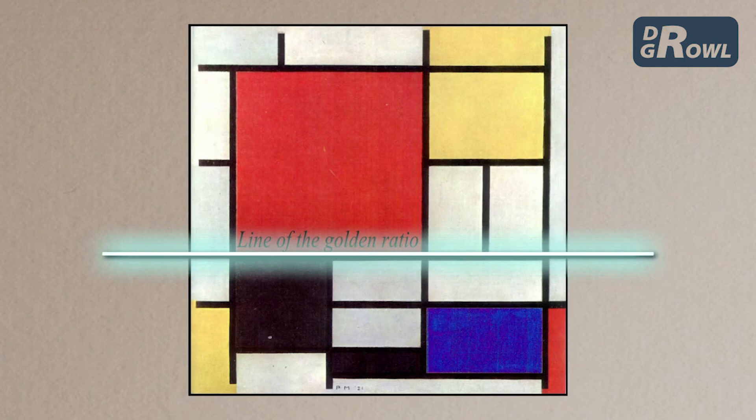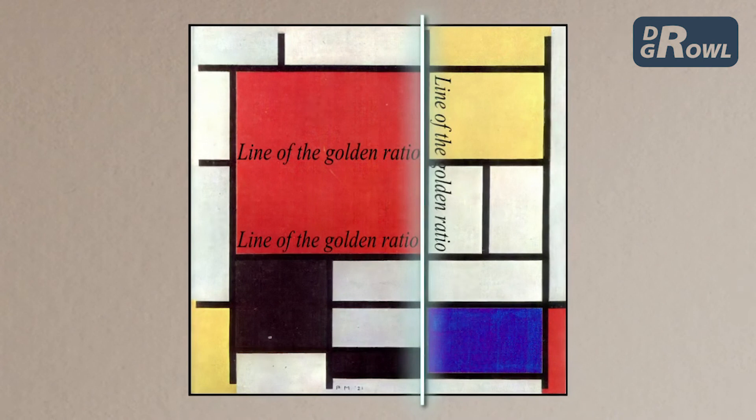We can also find the lines of the golden section lying between the geometrical forms in the colorful compositional painting by Piet Mondrian.